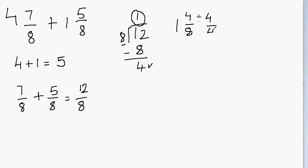4 over 4. So when you divide 4/8 with 4/4, let's ignore 1 for a bit. We are working on this fraction. So 4 divided by 4 will give me 1. And 8 divided by 4 will be 2. So our mixed number will be 1 1/2.